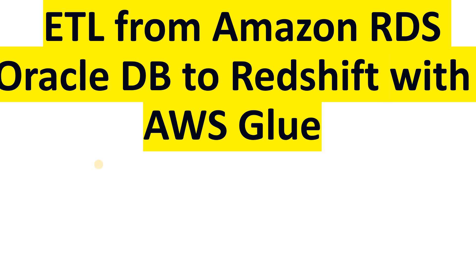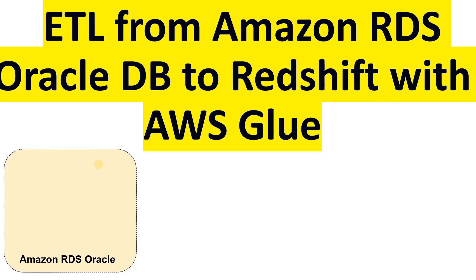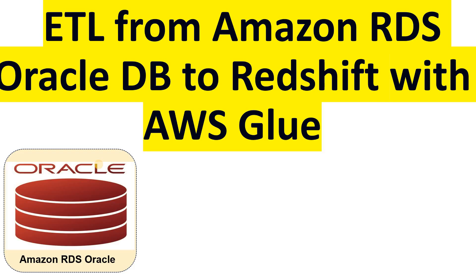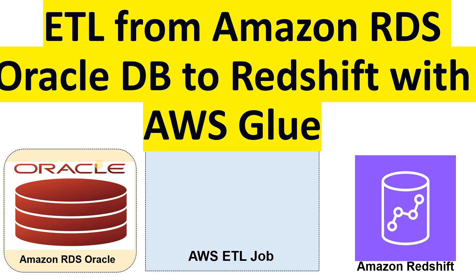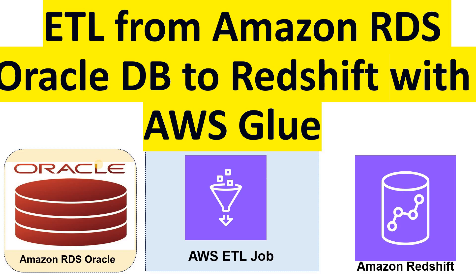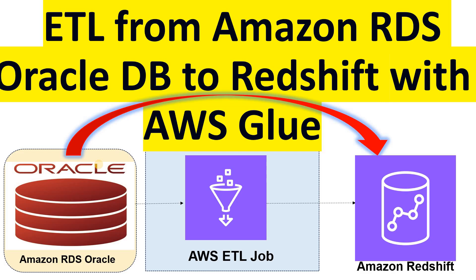In this video we will see how to perform an ETL operation from Amazon RDS Oracle database to Amazon Redshift cluster using AWS Glue. We'll cover the configurations on Amazon RDS for Oracle database and on the Amazon Redshift cluster, which is basically a data warehouse. The aim is to help you understand how to build the ETL pipeline with AWS Glue to migrate data from an example Amazon RDS Oracle database table into Amazon Redshift.